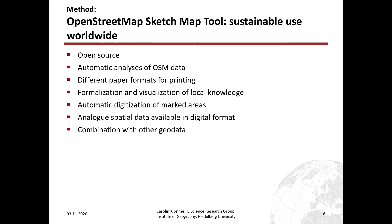To summarize the features of the OpenStreetMap Sketch Map Tool: first of all, it's open source, which is very important for sustainability — especially in vulnerable areas where there is no money for licenses. Furthermore, we have automatic analysis of OSM data, so a researcher doesn't need to go there with prior OSM experience; they can just click a button and get the answer on whether the data is good enough, without needing experience from previous studies. You also have the different paper sizes. With all these steps, it's possible to formalize and visualize the local knowledge of the citizens.